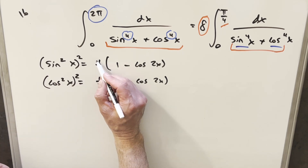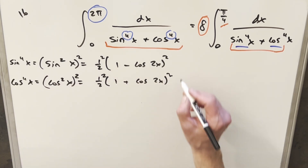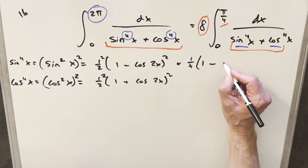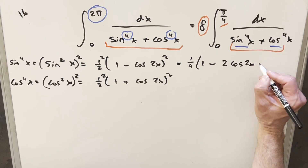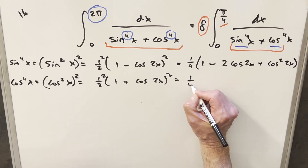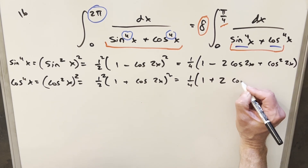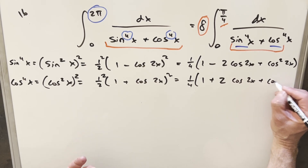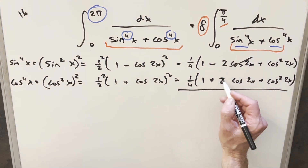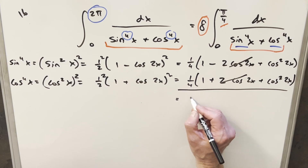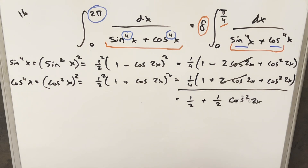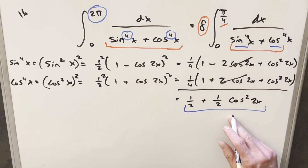When we add the two expressions together, the middle terms cancel (−2cos2x and +2cos2x). We're left with ½ + ½cos²2x. Now I'll substitute this back into the integral. I want to clean up the cos²2x term, so I'll multiply top and bottom by 2sec²2x over 2sec²2x — multiplying by 1 — to get rid of the fractions and introduce tan and secant.